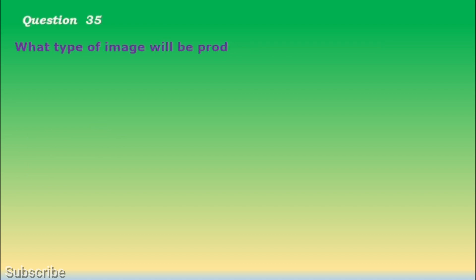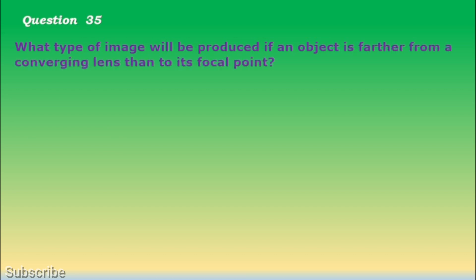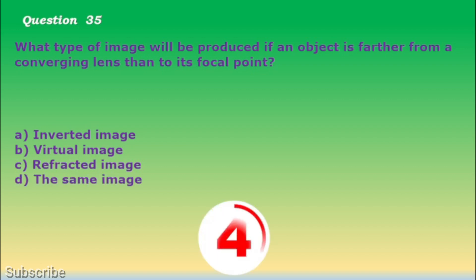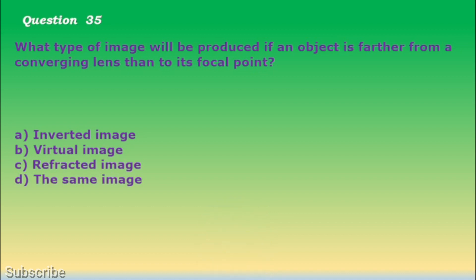Question number 35. What type of image will be produced if an object is farther from a converging lens than its focal point? a. Inverted image, b. Virtual image, c. Refracted image, d. The same image. The correct answer is letter a. Inverted image.